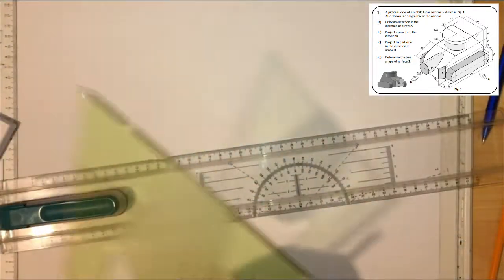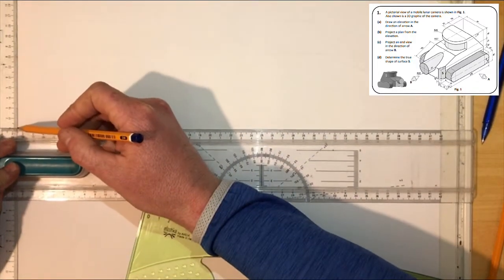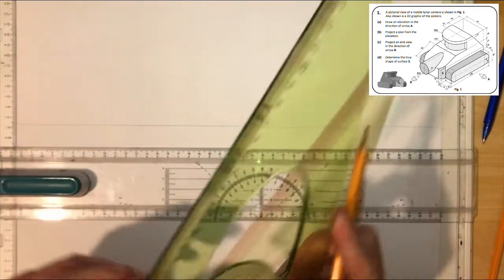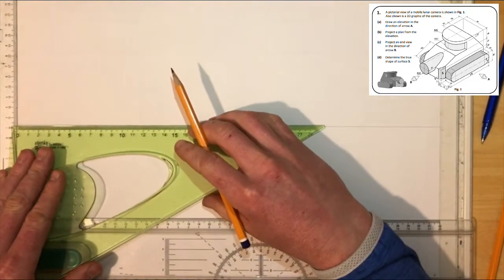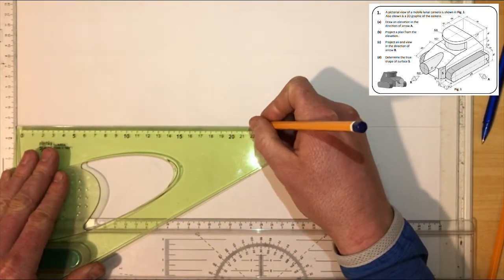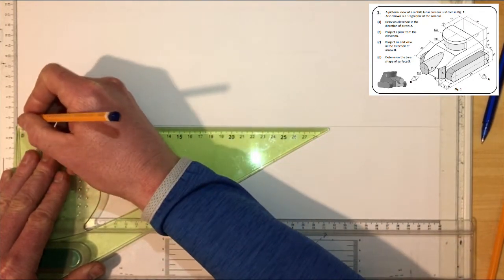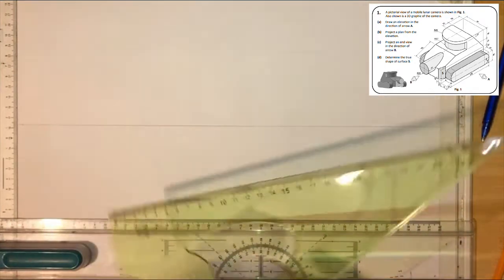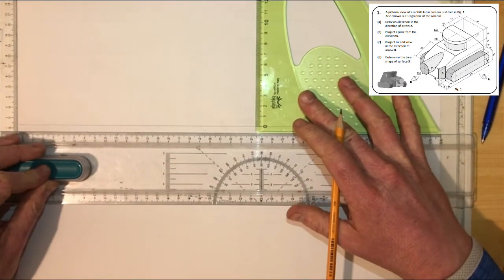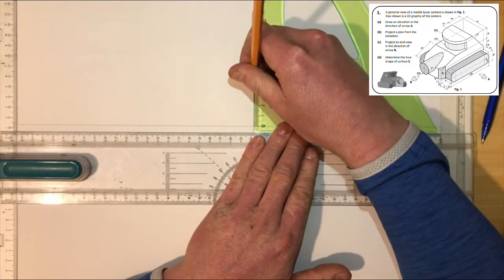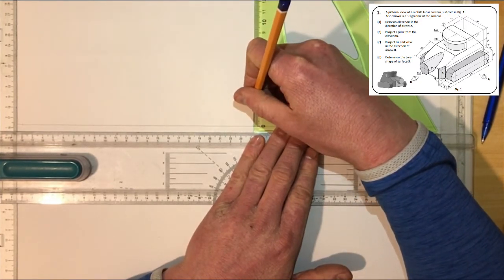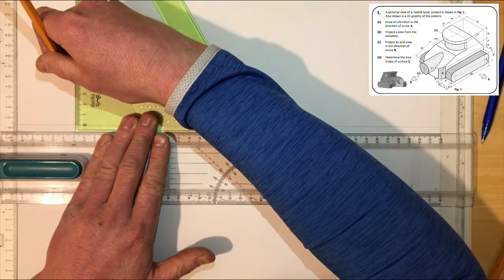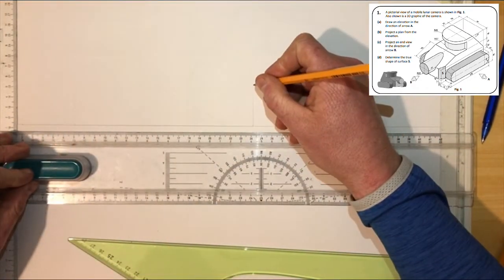So we get straight into it. The first thing we're going to do is draw our XY line. The overall width of our lunar camera is 220, so just mark that off to make sure you have enough space. The length of our tracks is 170, so I'm just going to mark off 170. It's up 40 — I'm going to measure it halfway because we'll need that in a while. Same here, up 40.